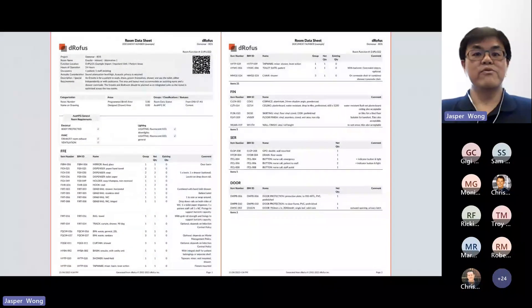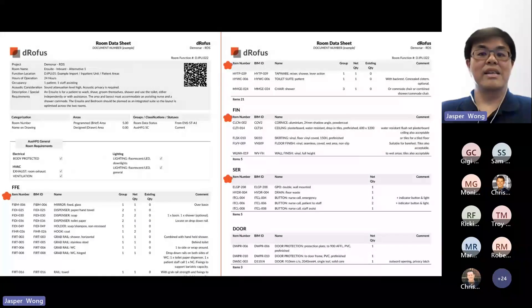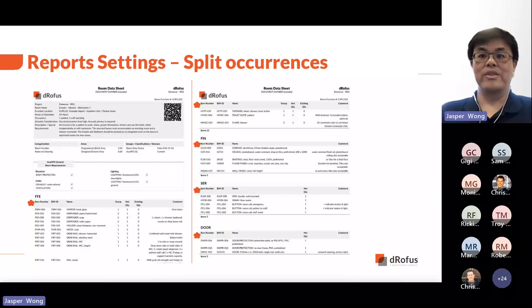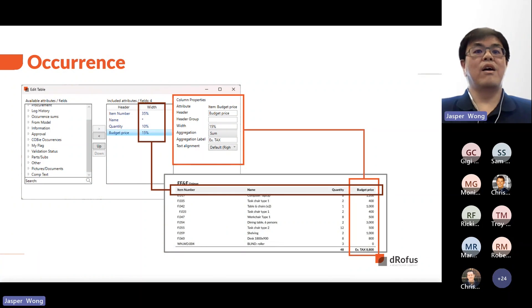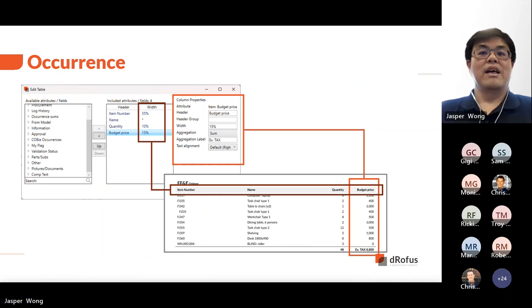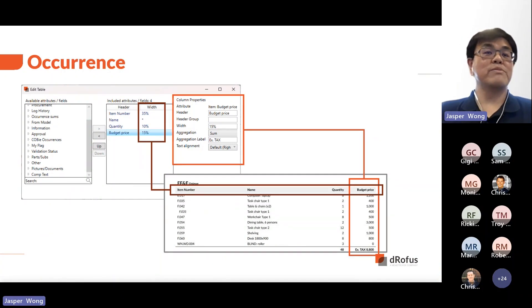Here is a room data sheet with the split occurrence list. The key thing to note is that each list has its own heading with its own information. This is another example for an item list — note that we're using the percentage to define the column width, and also with the budget price, the report provides the total price at the end of the list.